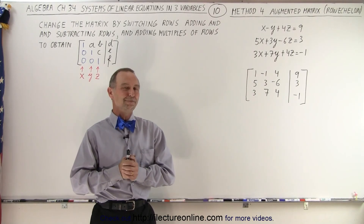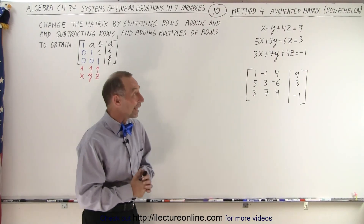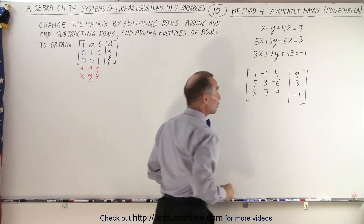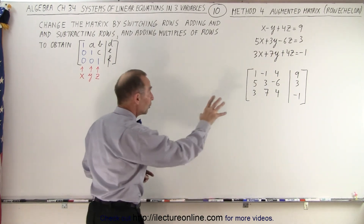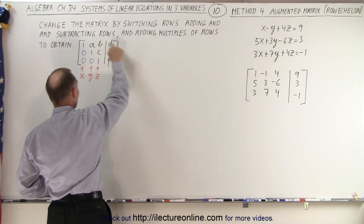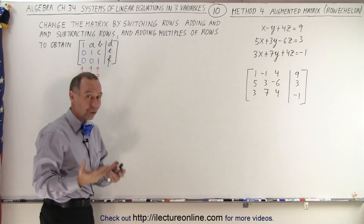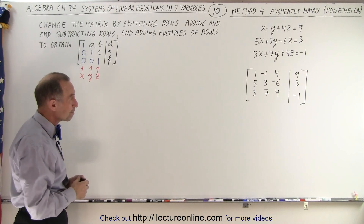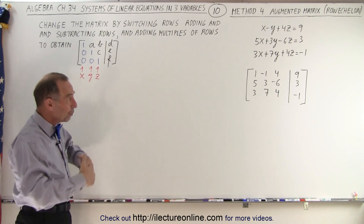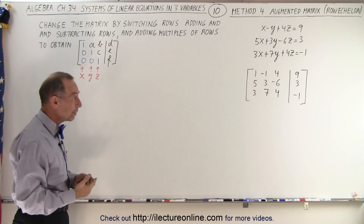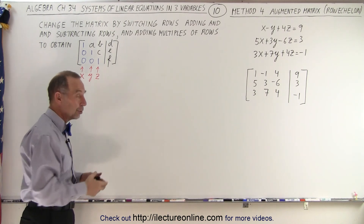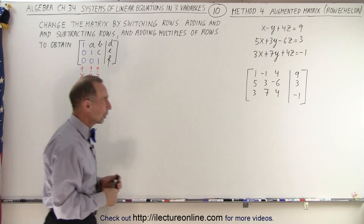Welcome to our lecture online. So how do we get this augmented matrix, which represents a system of linear equations in three variables, and change it from that form into row echelon form? Once we have it in that form, we can easily determine x, y, and z. We do that by adding rows together, moving rows around, or multiplying a row by some number and then adding it to another row.